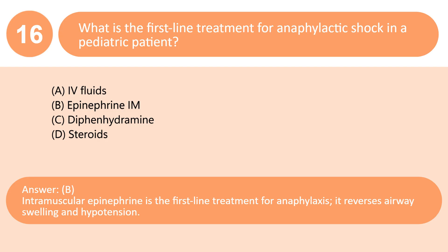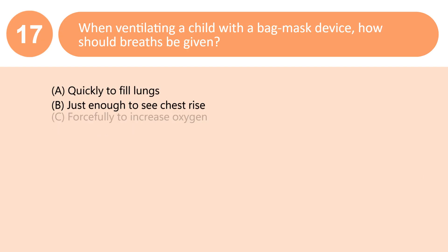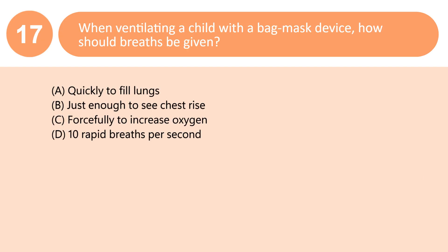When ventilating a child with a bag mask device, how should breaths be given? A. Quickly to fill lungs. B. Just enough to see chest rise. C. Forcefully to increase oxygen. D. 10 rapid breaths per second. Answer: B. Avoid overventilation — give breaths slowly until you see visible chest rise.